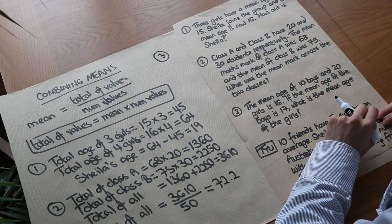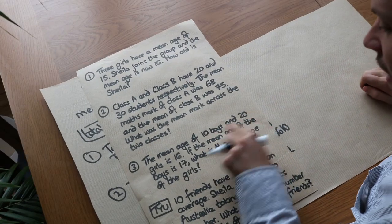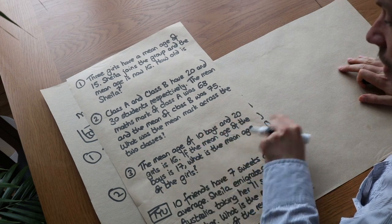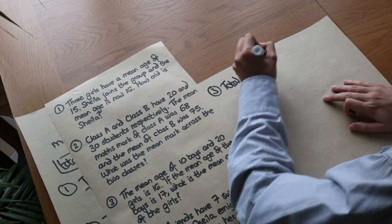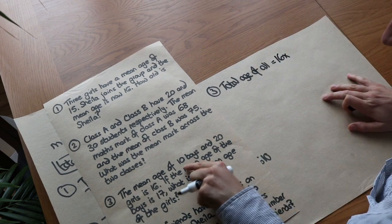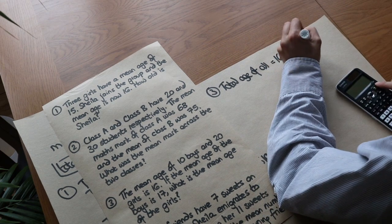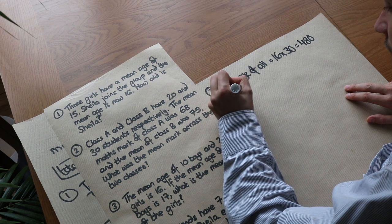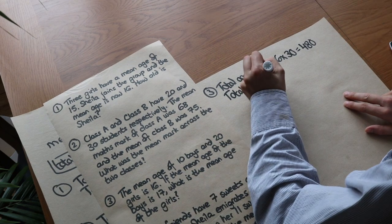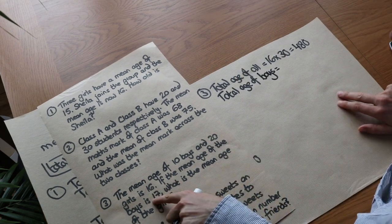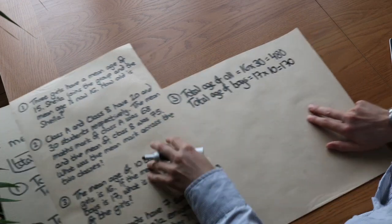Question 3: The mean age of 10 boys and 20 girls is 16. If the mean age of the boys is 17, what is the mean age of the girls? The mean age of everyone is 16, so the total age of all is 16 times 30 (since 10 plus 20 is 30), which gives 480.